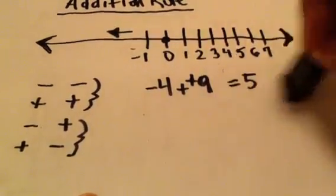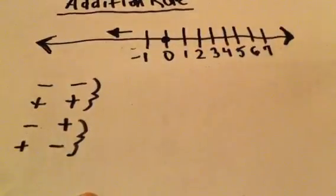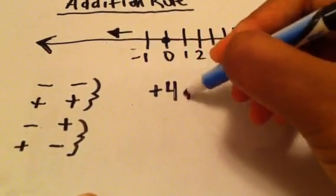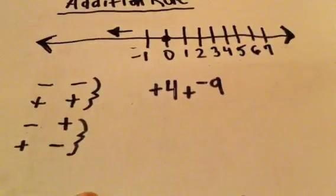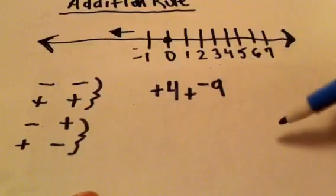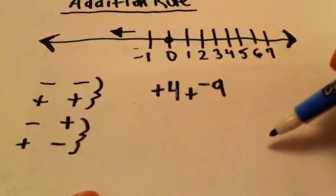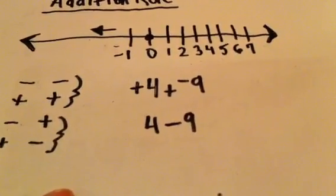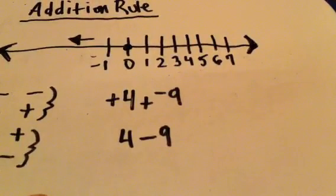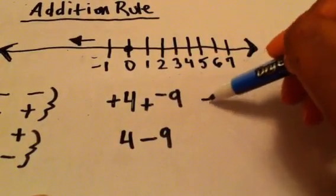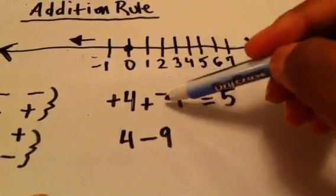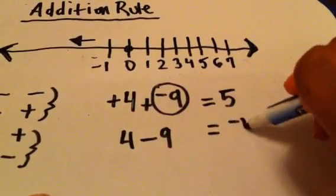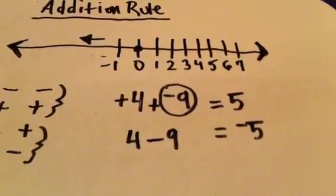Let's do it with a positive 4 and a negative 9. Dealing with the absolute value and then adding the sign afterwards is your way of getting the answer without having to use the number line every single time. You have positive 4 plus negative 9, which is the same thing as 4 minus 9. You take the smaller number from the larger: 9 minus 4 gives you 5, just like before. But this time our 9 is negative, so the final answer is negative 5. That's how you add numbers that have different signs.